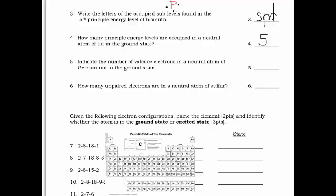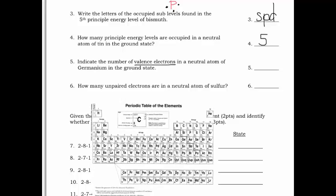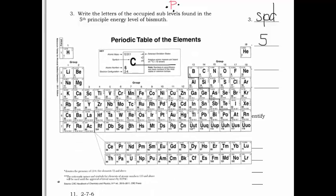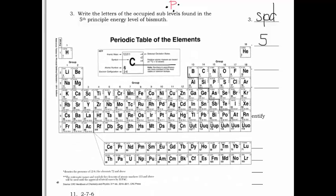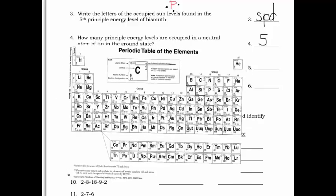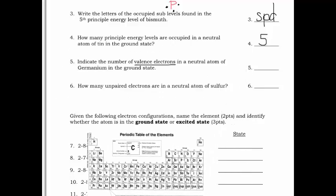Number five: indicate the number of valence electrons in a neutral atom of germanium. All we're doing is looking for that valence number, so we need the electron configuration and just take the very last number. Germanium is element 32, right here. The last number in the configuration is four, so that's all we're looking for — the valence number is four.